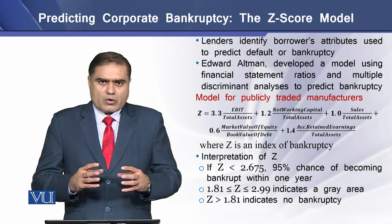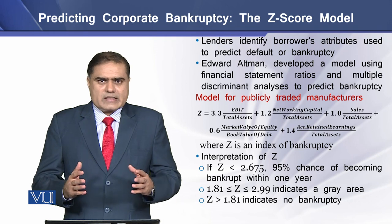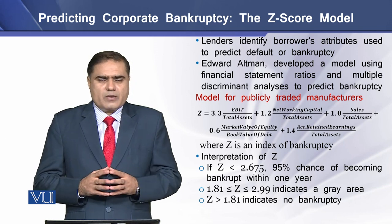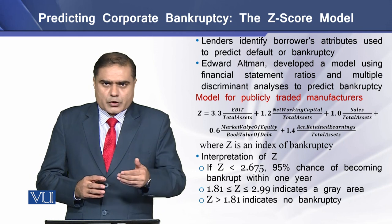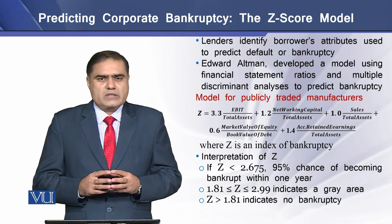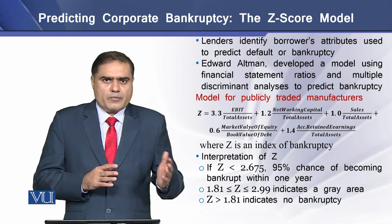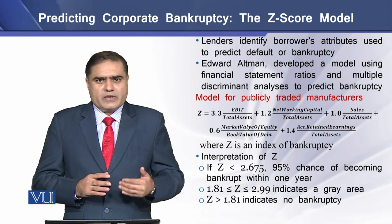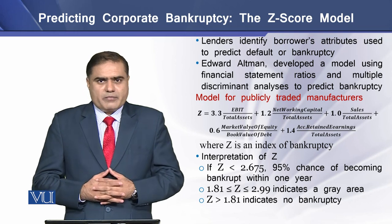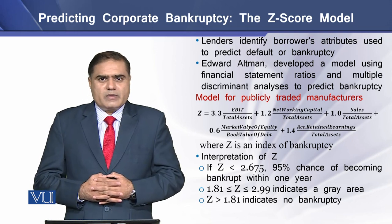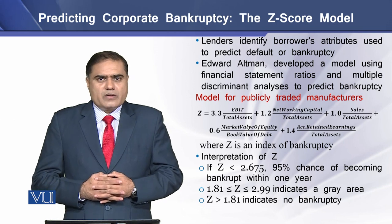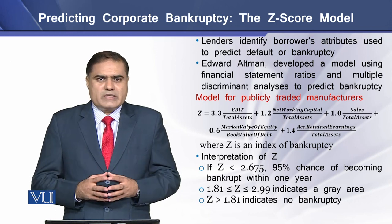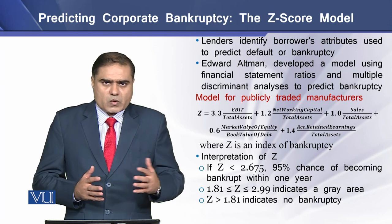In both of the models, he developed an index that he named as Z-score. To determine the Z-score, he used two components: one component was a financial ratio, and the second component was the coefficient and the product of that ratio and the coefficient. In the first model, used for publicly traded manufacturing firms, he determined six ratios and accordingly six coefficients. The sum of the products of these ratios and coefficients is termed as the Z-score.